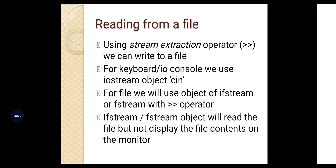Now let's look at reading from a file. To read from a file we use the stream extraction operator — we are taking the data from a source and extracting it into our program. For I/O devices we use the cin object with the stream extraction operator. Stream insertion is for writing to a file, and stream extraction is for reading. For files, we use an object of the ifstream class, which by default has the property for reading. Note that reading the file will not automatically display the contents on the monitor.